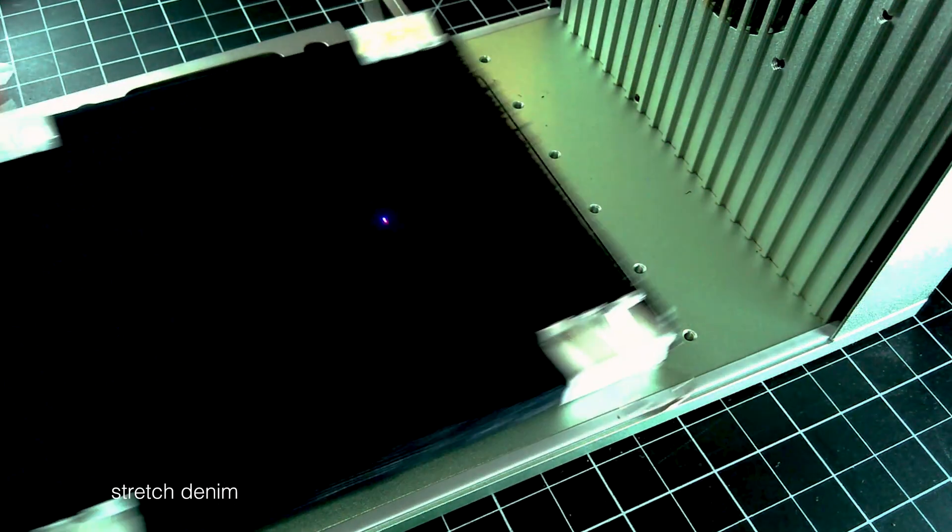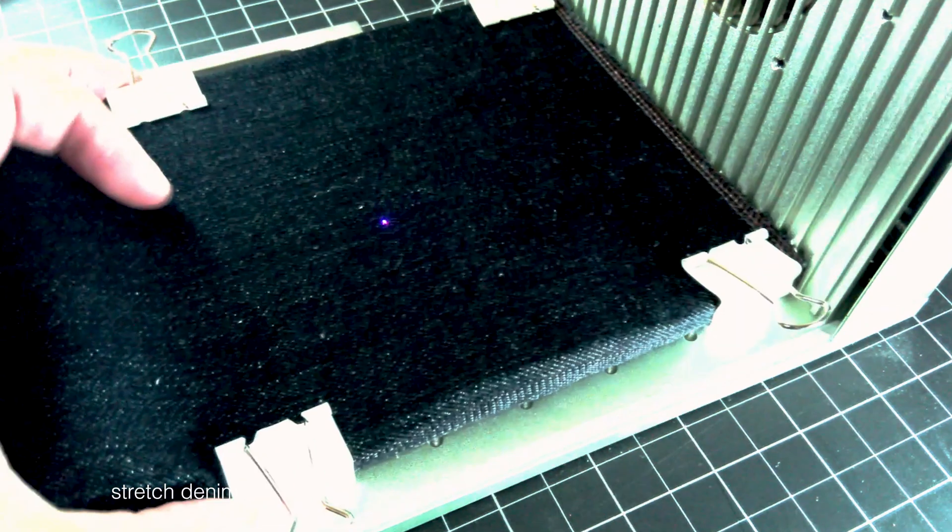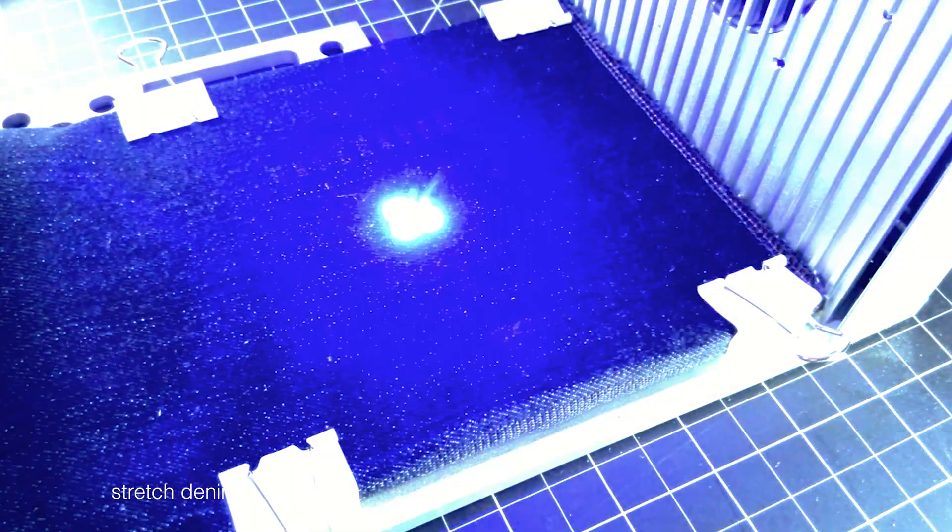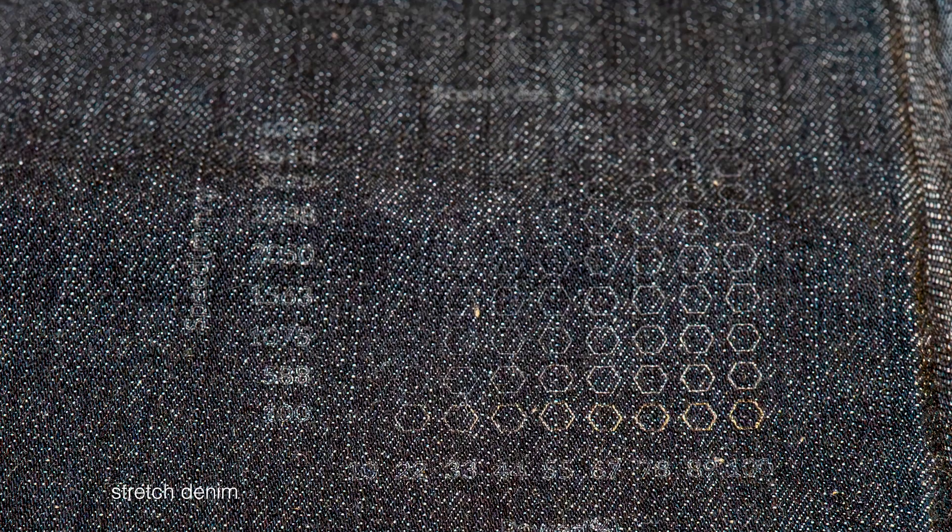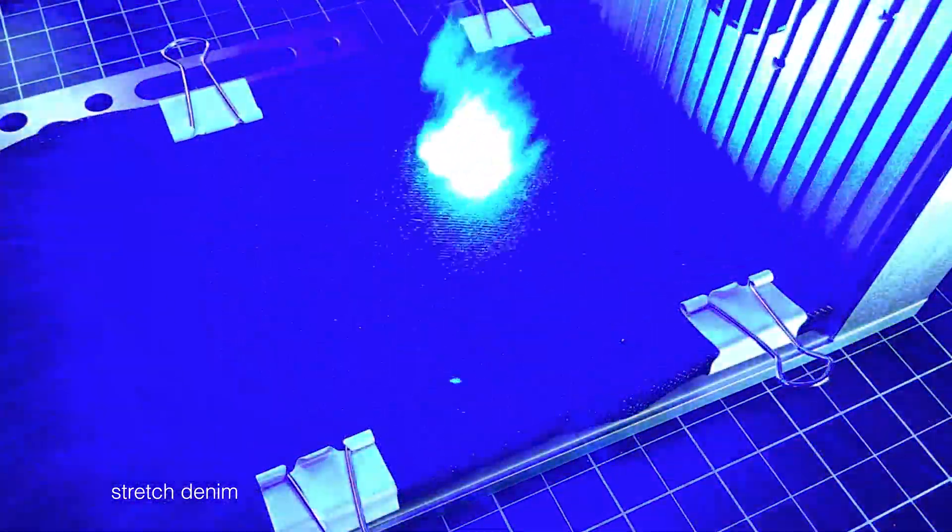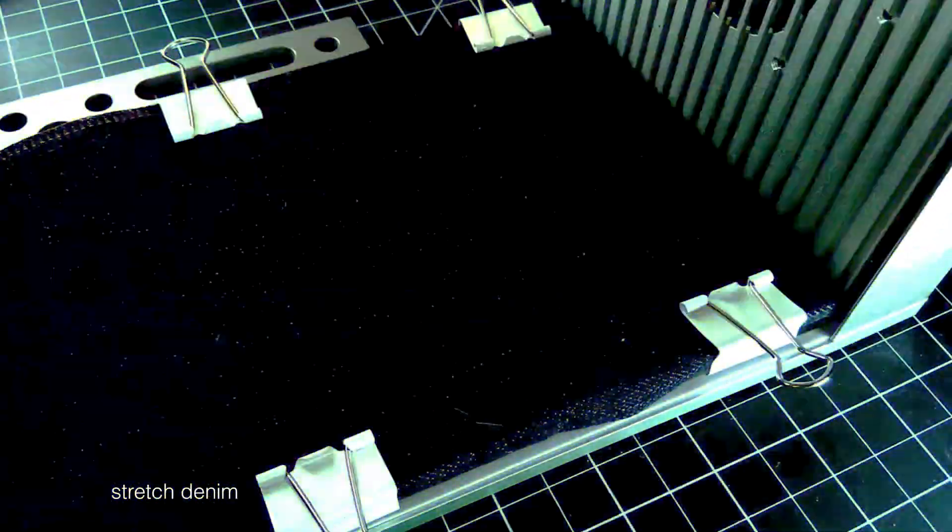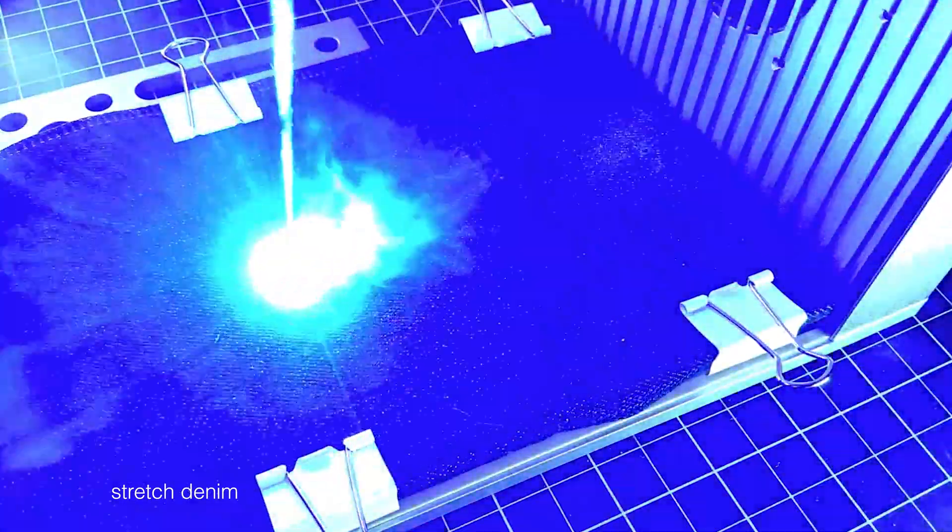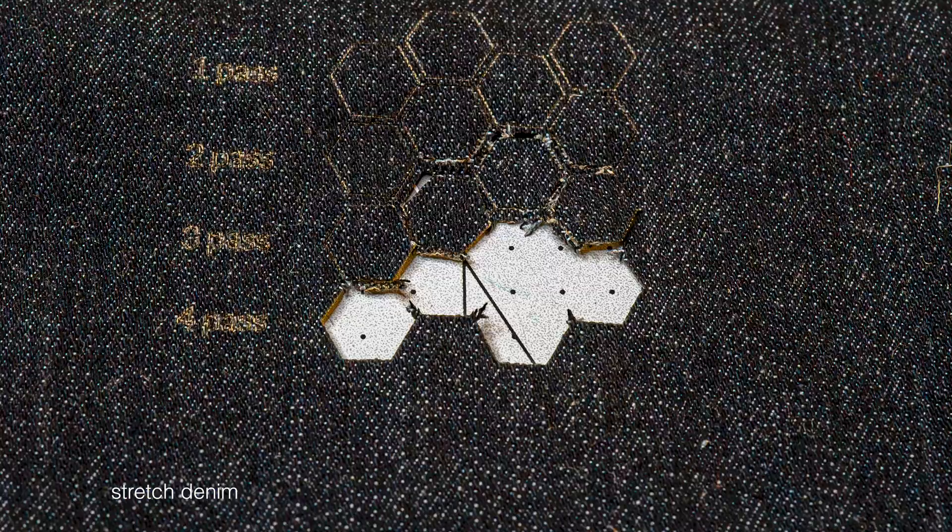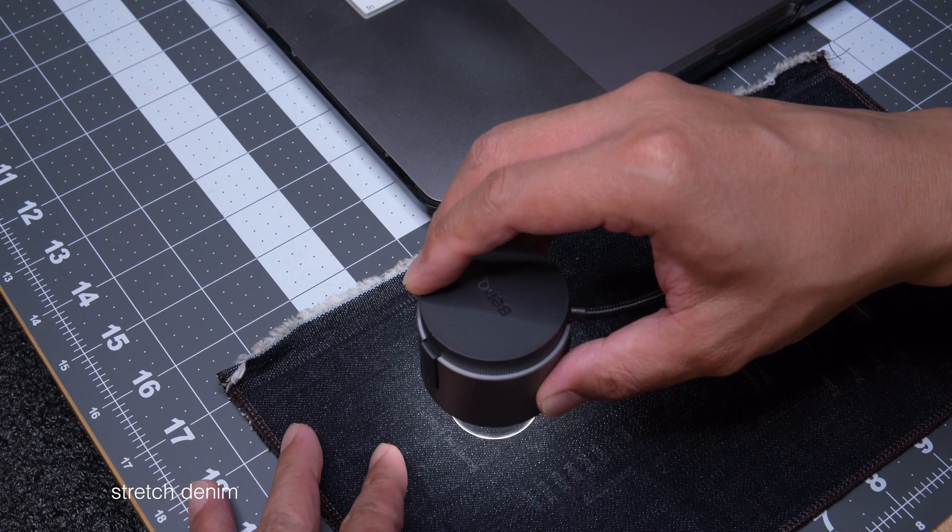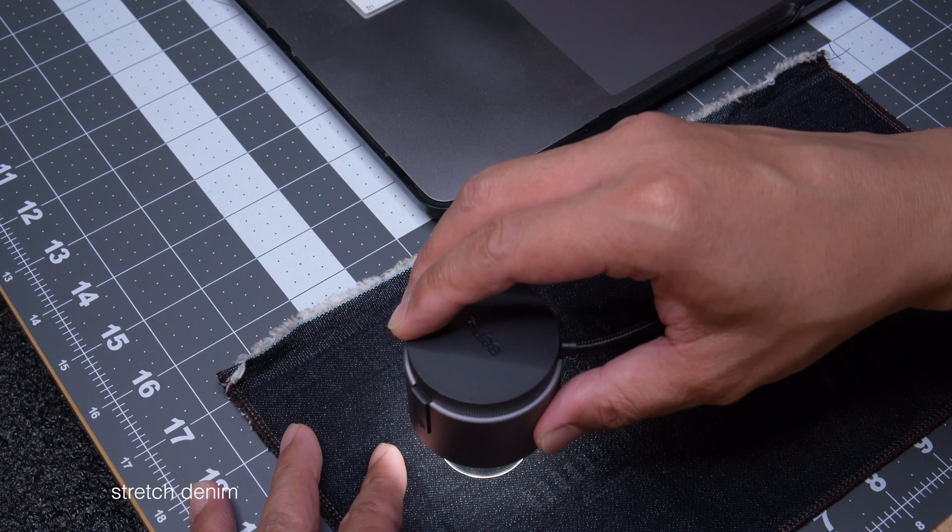The denim spandex blend showed visible light markings at the higher end of the power spectrum, suitable enough to use the laser to apply a design to the material without compromising the integrity of the fabric, though it should be noted that sharpness of that design can vary greatly depending on the qualities of the denim. There was very little scorching or burning when the blue diode laser was set at 100% power and 100 millimeters per second. Cutting through it resulted in some fraying and any material less than one to two millimeters left between cuts didn't stay together.